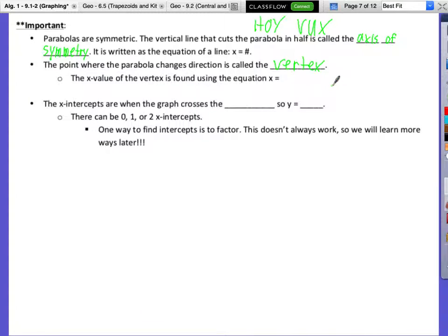The point where the parabola changes direction, the point where it changes direction is called the vertex. Now, a vertex is a point. So, how do we write points? X, comma, Y. So, there's an X value and a Y value for every point. So, we can find the X value of the vertex using the equation X equal to negative B over 2A from our A, B, and C of our quadratic. So, it's negative B over 2A, and that being our X.